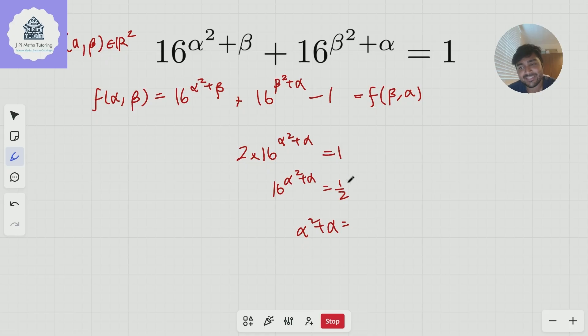And if you solve this equation here, there's only one solution: α = -1/2. And you can check that that is genuinely a solution to this equation.